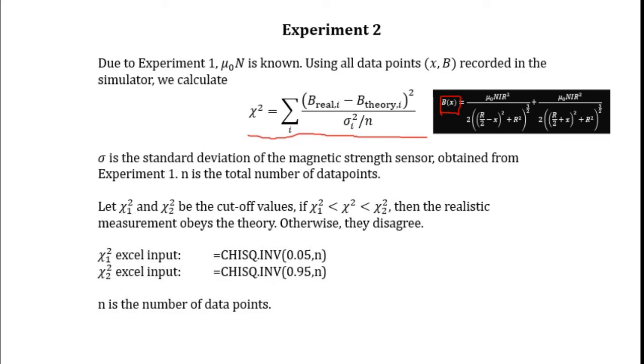The value of χ₁² and χ₂² can be obtained by using the Excel function. So you just have to type in the following expression in the Excel formula box. And again, the lowercase n in the expression is the total number of data points recorded from the simulator.